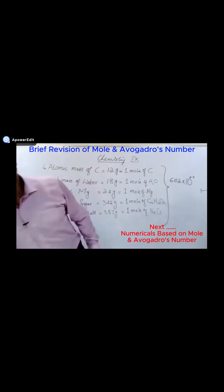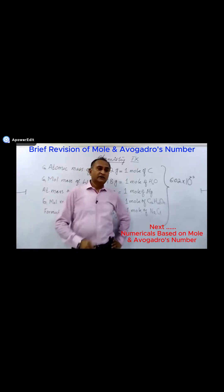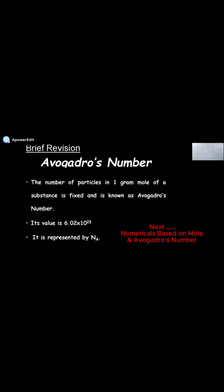So what was the definition of Avogadro number? The number of particles in one mole of any substance is fixed and is known as Avogadro number. Its value is 6.02 × 10²³. This means one mole of any substance contains a fixed number of particles called the Avogadro number. And obviously, if we have 2 moles the value is doubled, if we have 3 moles it is multiplied by 3, and so on.